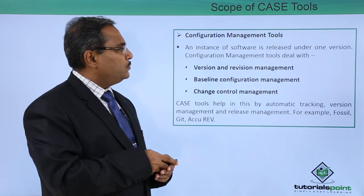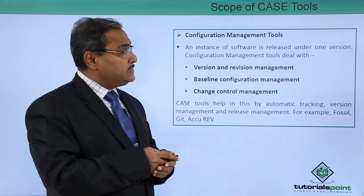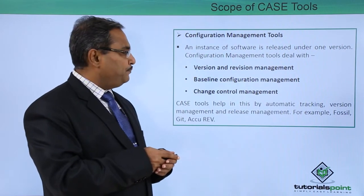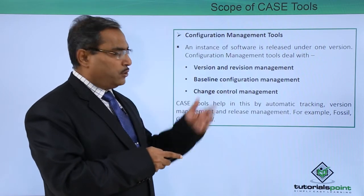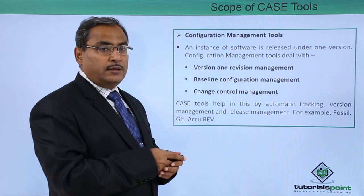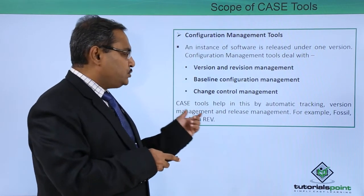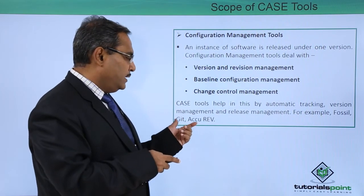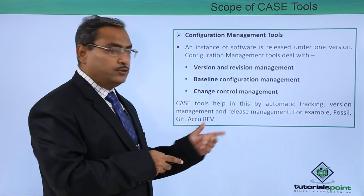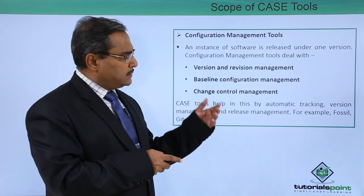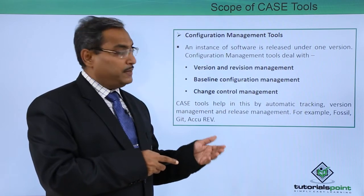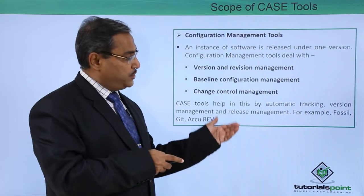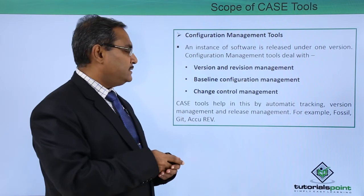Next is our configuration management tools. As an instance of software is released under one version, configuration management tools deal with version and revision management, baseline configuration management, and change control management. CASE tools help by automating version tracking, version management, and release management. Examples include Fossil, Git, and AQUREV. In a separate video we have discussed configuration management in detail, but here we are sharing the respective CASE tools which can be used in this particular phase.